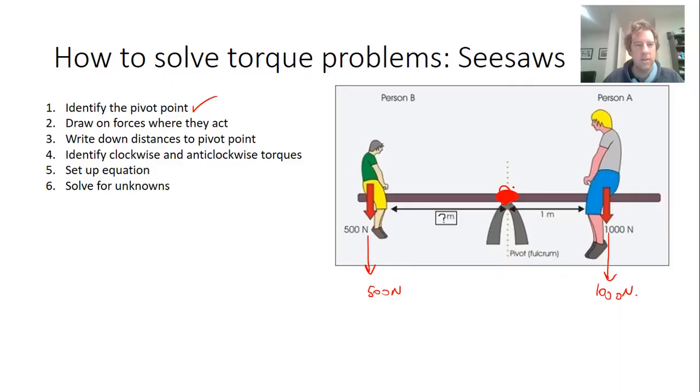And there's another force because this seesaw doesn't accelerate downwards. It's not an unbalanced force. There must be an upwards force here to cancel out those two. It must be a normal force. In fact, I can figure that out. It must be equal to 1500 newtons because the two downward forces totaling 1500 must be cancelled by that one going up.